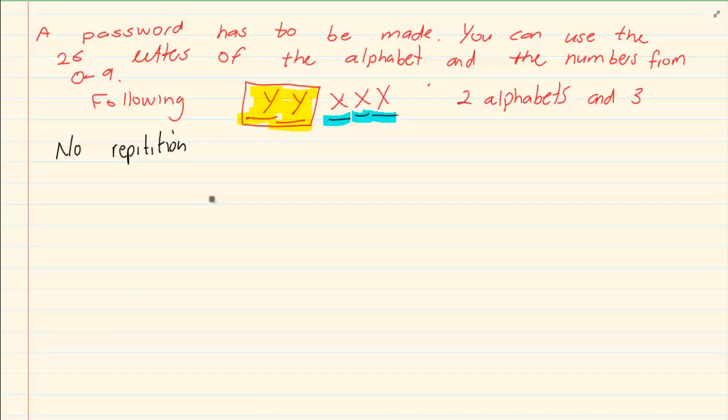No repetition. So now what happens? For the first two positions I know it's the letters. If I use 26 for the first, then how many do I have for the second one? Only 25. Then we have the numbers. If I have 10 for the first, then the second one is 9 and the third one would be 8. So what would my total be? You would say 26 times 25 times 10 times 9 times 8. And your final total will be 468,000.